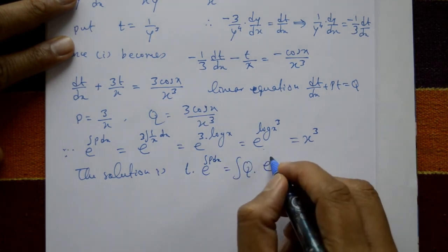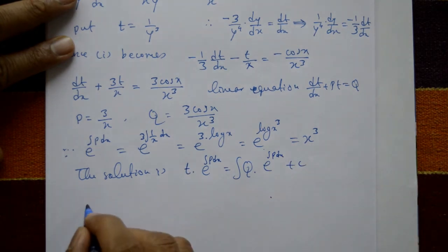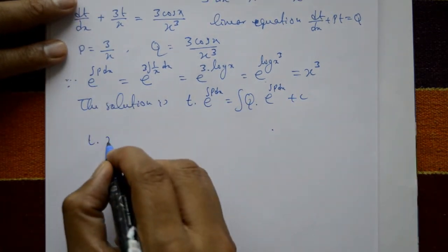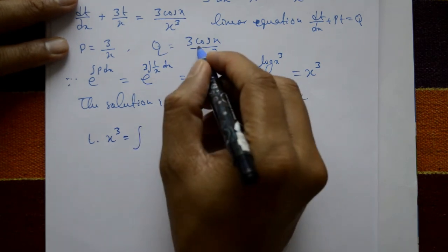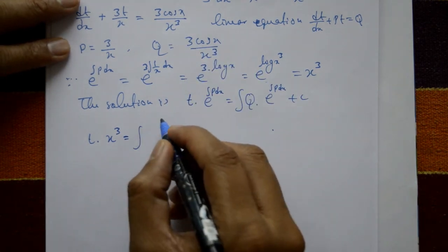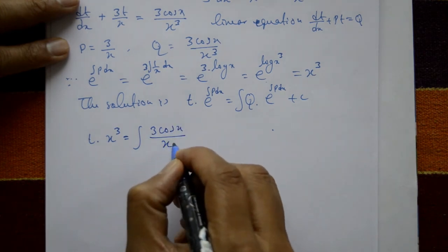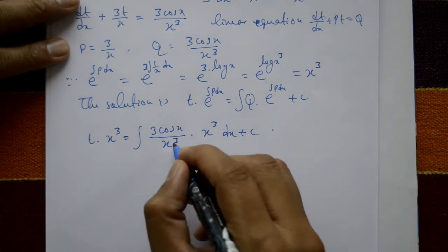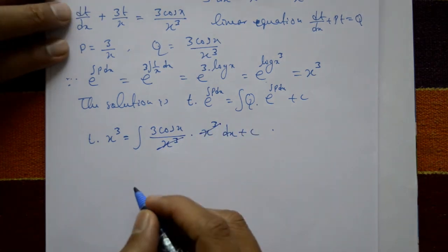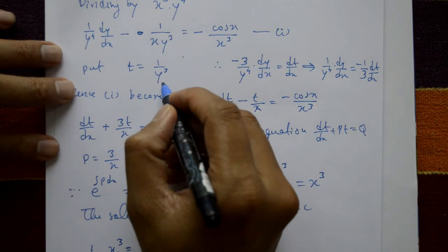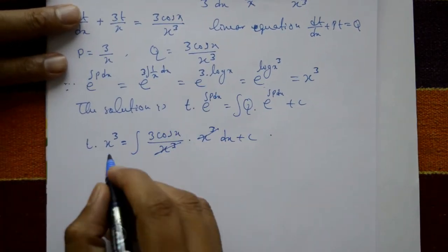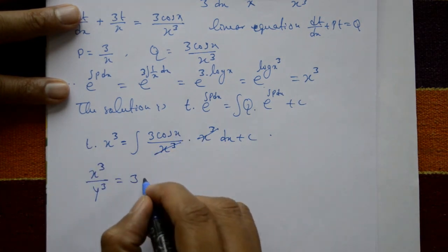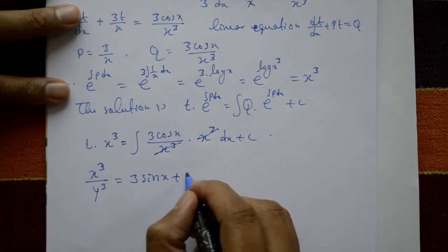The solution is t times (integrating factor) equals integral of Q times (integrating factor) plus C. So t times x³ equals integral of (3cos x / x³) times x³ dx plus C. The x³ terms cancel, giving t times x³ equals 3 integral of cos x dx plus C, which equals 3 sin x plus C. Since t equals 1/y³, the required solution is x³/y³ equals 3 sin x plus C.